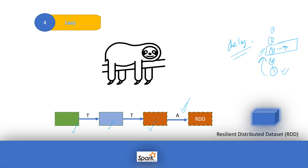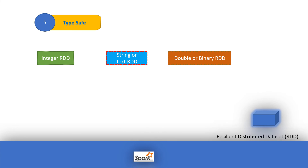The fifth feature is that RDDs are type-safe. Type safety means compile-time checking. At compile time, Spark knows the column names and their data types — whether it's an integer, string, double, or binary. This is determined during compilation, which is one of the key advantages of RDDs.